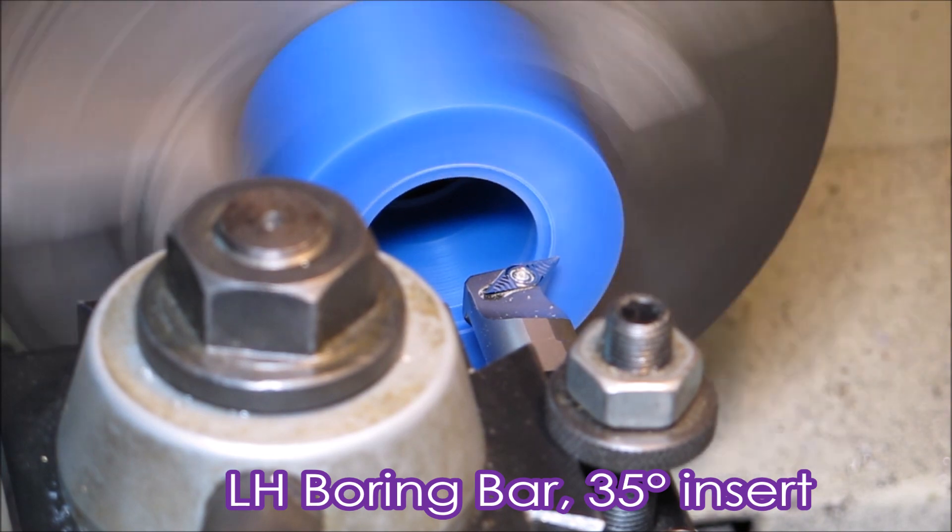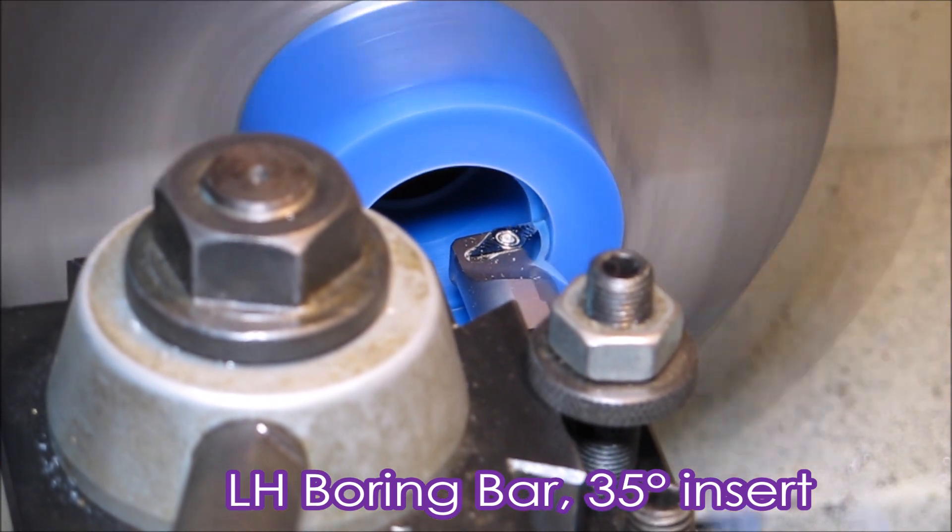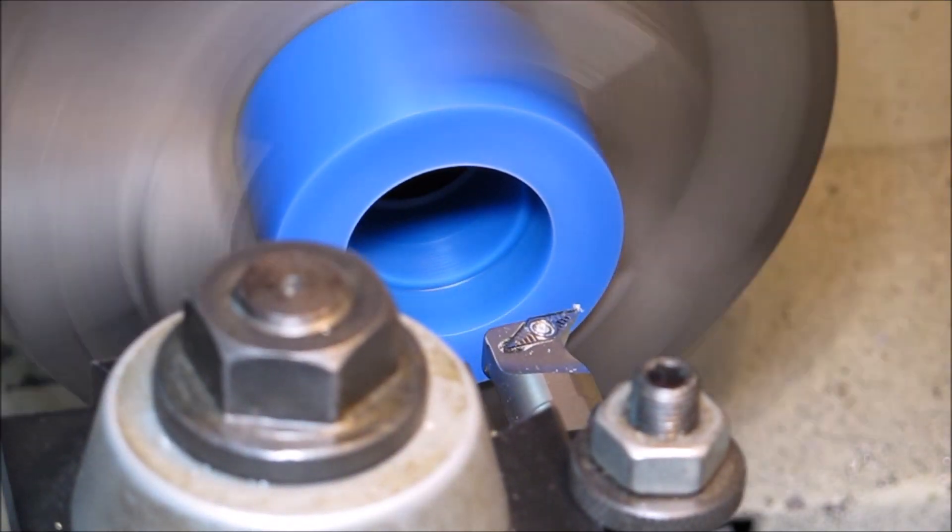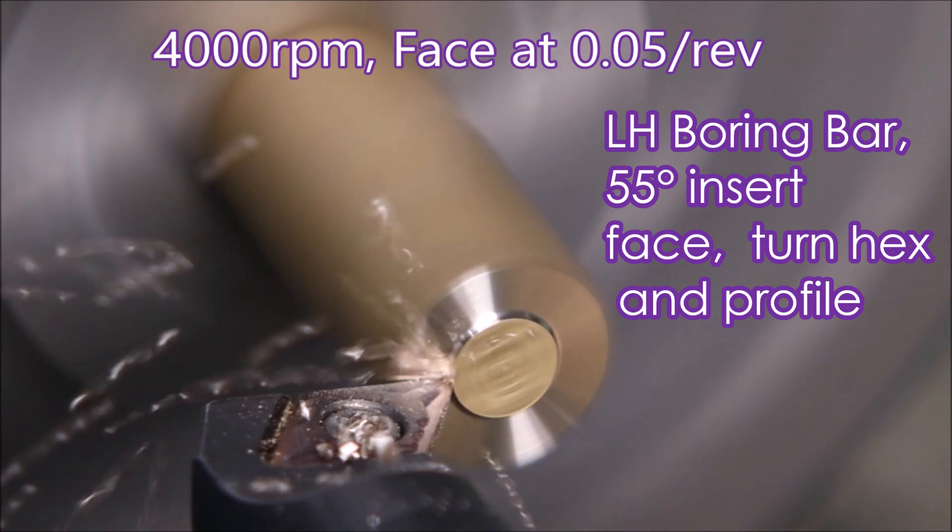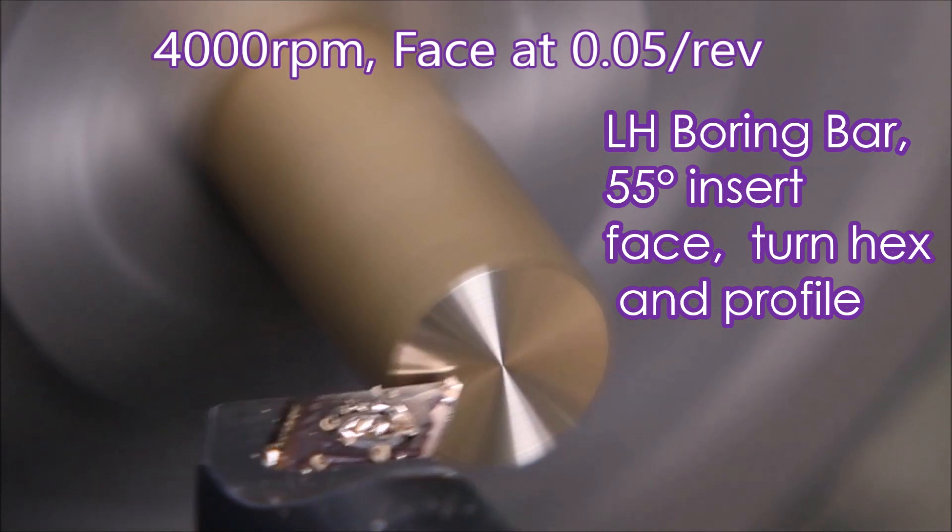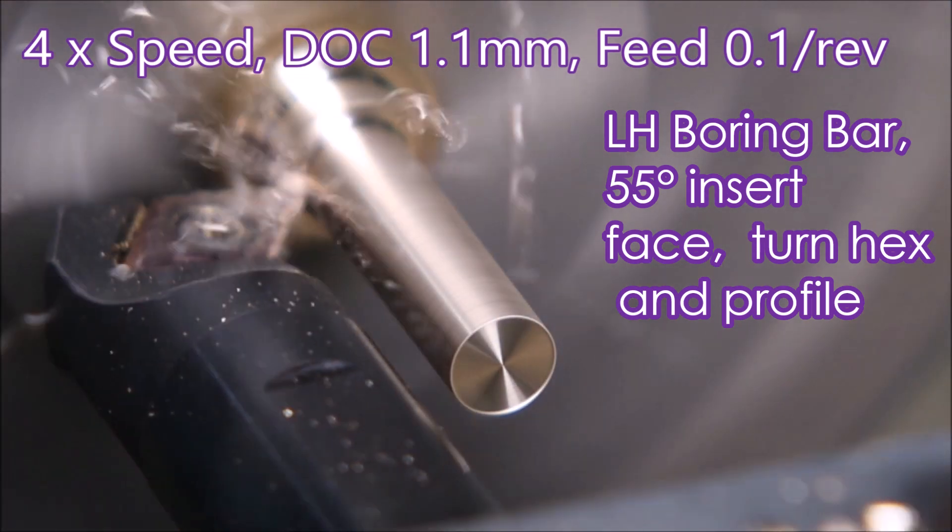And on to left-handed boring bars, which I really like because they allow you to see what you're doing when you're boring. Just have to remember to reverse the direction of your machine. Left-handed boring bar again. Here I'm using it because my turret wasn't functioning, and this allowed me to hold it in a gang block to do the turning and then use the turret, which wasn't working, to hold my parting tool.